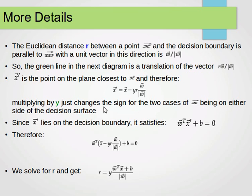The reason we multiply by r is that it just changes the sign for the two cases of the vector x being on either side of the decision surface. So y here can be either minus one or plus one.